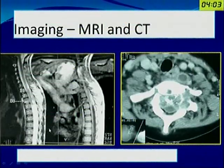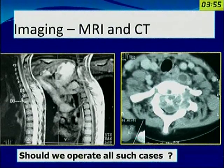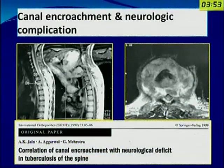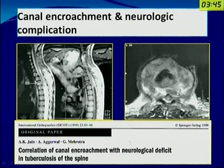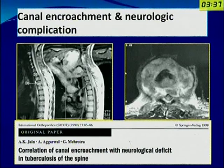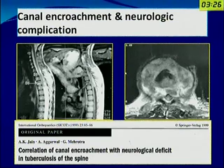MRI has added another facet. Every day we get an MRI report showing a patient of TB spine with severe intraspinal compression. Should we operate all such patients? We evaluated a series of 15 patients who had no neural deficit but had MRI-based cord compression. We calculated that if there is no evidence of instability in terms of panvertebral disease, then up to 76% canal encroachment is compatible with an intact neural state. That means only those patients who have an indication of surgery for neurology or instability should be taken for surgery, and not on MRI-based pictures alone.